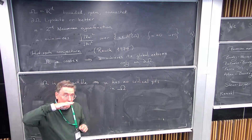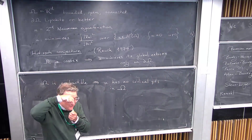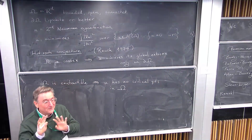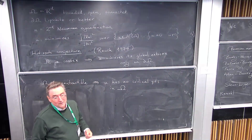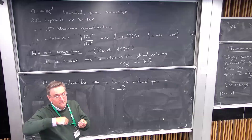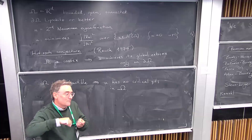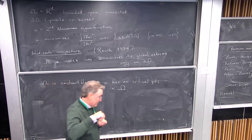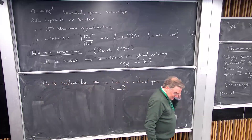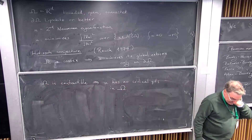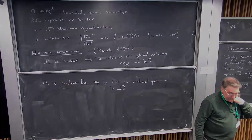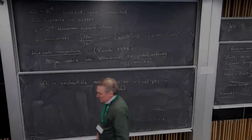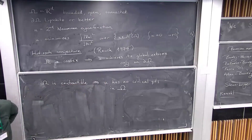Of course, finding critical points is hard in a sense because the gradient is zero there. But there are ways around that — for example, you can use the Euler-Poincaré-Hopf theorem to determine whether you have critical points or not. Numerically, the conjecture really seems completely true.